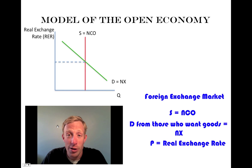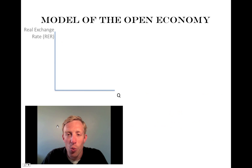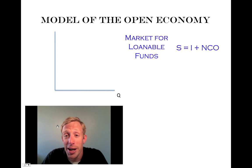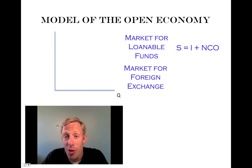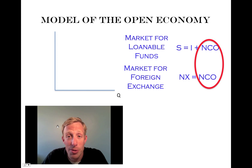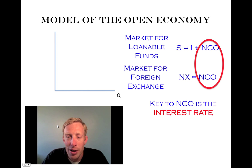So now we have our two markets: the market for loanable funds and the market for foreign exchange. We need to connect the two. Our bridge is built by the one thing that's common between those two markets. In the loanable funds market, savings equals investment plus net capital outflow. In the foreign exchange market, net exports equals net capital outflow. So the one thing that's the same between those two markets is the net capital outflow number — that's the connection and the foundation of our bridge. The key determinant for net capital outflow is the interest rate.